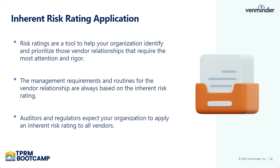Now that we've completed the inherent risk assessment and we have our risk rating, what do we do with that rating? These risk ratings are another tool to help your organization identify and prioritize those vendor engagements and relationships that are going to need the most attention and rigor. Your high-risk and critical relationships are always going to need more due diligence, more thorough monitoring, different kinds of contract structures, etc. That's why we use risk ratings to help us establish what the specific routines are — we always base the frequency and intensity of any third-party risk management requirement on that inherent risk rating. Our auditors and regulators expect that we're going to have an inherent risk rating for all vendors and all engagements, so completing this process provides great evidence in the event of a regulatory audit or exam.